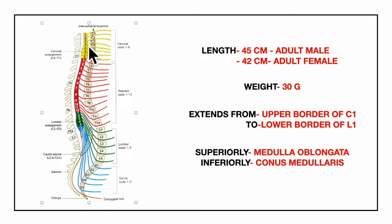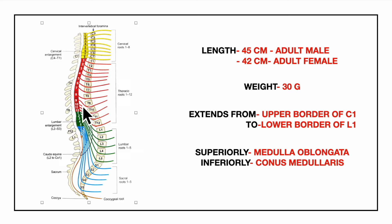Because the spinal cord is much shorter than the length of the vertebral column, the spinal segments do not lie opposite the corresponding vertebrae. For example, if we consider the T9 spinal segment, it would not necessarily lie at the level of the T9 vertebra, because the length of the spinal cord is shorter than that of the vertebral column.